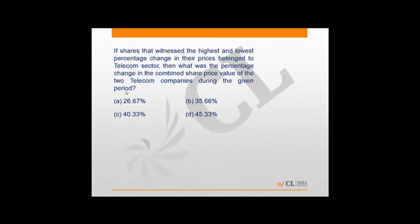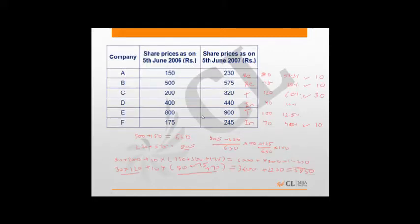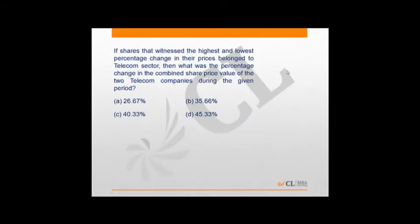Next question: if the shares with the highest and lowest percentage change belong to the telecom sector, what was the percentage change in the combined share price of the two telecom companies? The highest percentage change is in company C (60%), and the lowest is in company D (10%), so both belong to telecom. The total price as on 5th June 2006 is 600, and the total profit is 160. The answer is 160/600 × 100, which can be easily calculated.